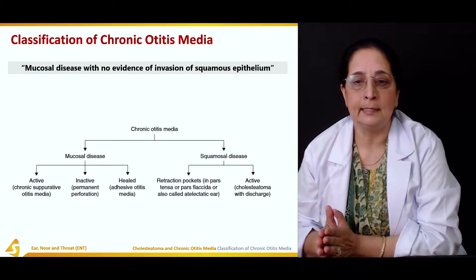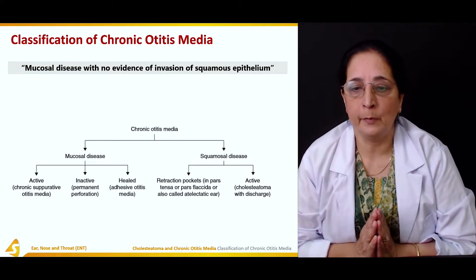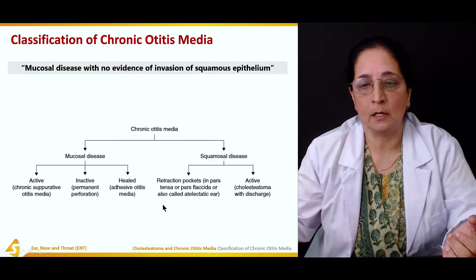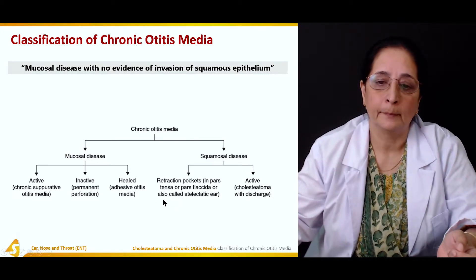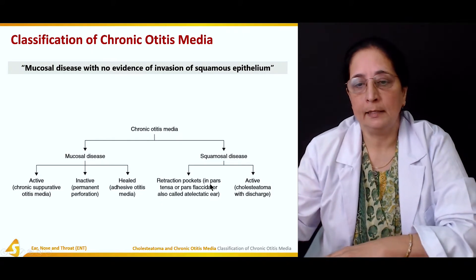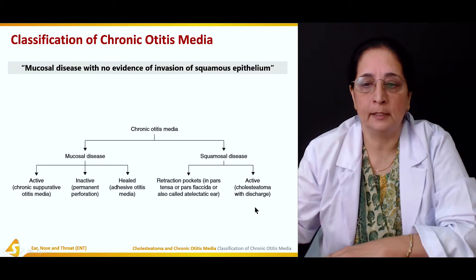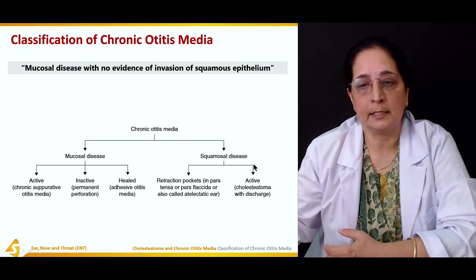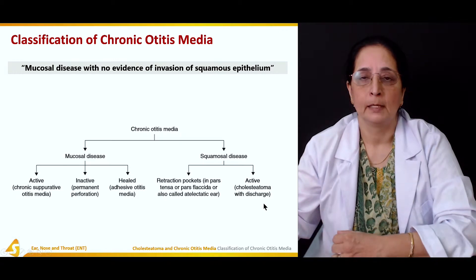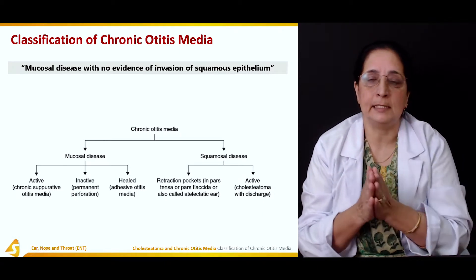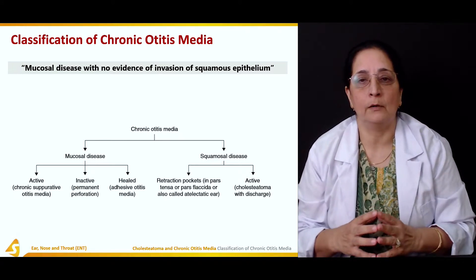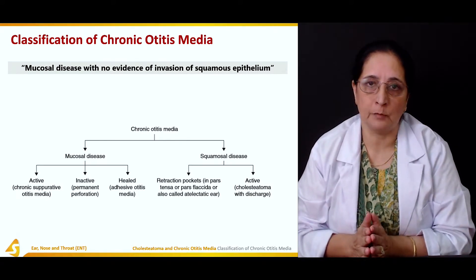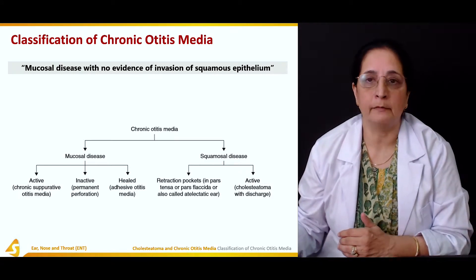In squamous disease, there are retraction pockets which are in pars tensa or pars flaccida, also called atelactatic ear. There is also an active form which is cholesteatoma with discharge. So in squamous disease of chronic otitis media there is retraction pocket formation and then there is cholesteatoma with discharge. These are the two main classifications of chronic otitis media.